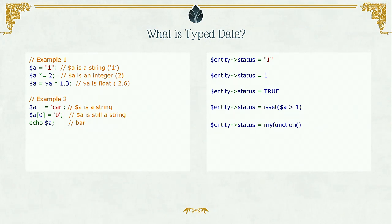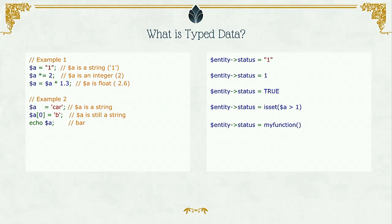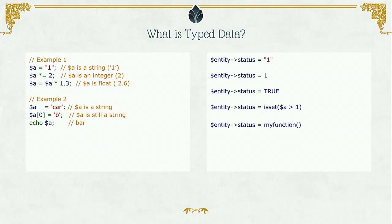Type data is an approach in Drupal 8 core to introduce data types to various components. Whenever we talk about data in Drupal 7, it ends up being about entities. Up to Drupal 6 we didn't have a concept of entity — node was handled in a special way, user was different, block was separate. In Drupal 7 we brought most content under entity; in Drupal 8, everything is under entity, divided into two categories: config entities and content entities. At that level, you need to know what type of data you're dealing with.